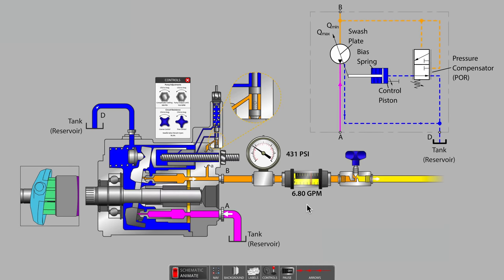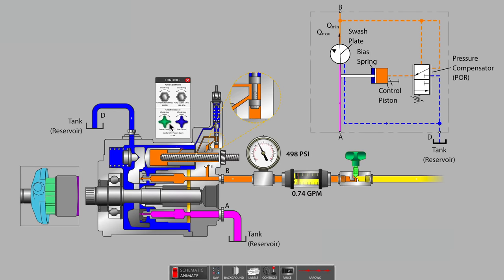Remember, we started out with 10 gallons per minute. As we continue to tighten the needle valve, we eventually arrive at a circuit pressure of 500 psi and we find out that the flow meter now indicates zero flow.